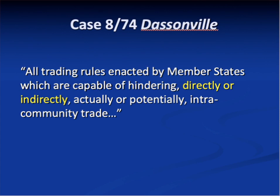The trading rules have to be capable of hindering directly or indirectly. This is a reference to whether the measure is distinctly applicable or indistinctly applicable. Distinctly applicable measures treat foreign and domestic products differently — they're a fairly obvious restraint on trade. But indistinctly applicable measures treat foreign and domestic products the same, but nonetheless have an indirect effect on trade. That is the kind of rule that much of the case law under Article 34 is all about.